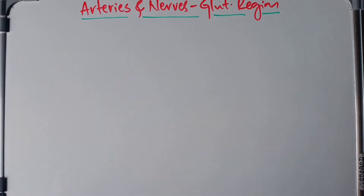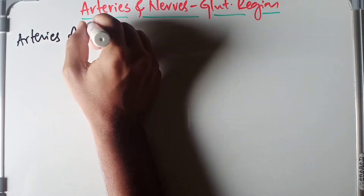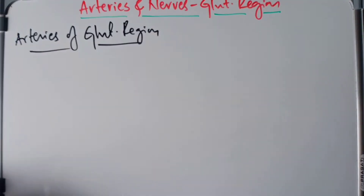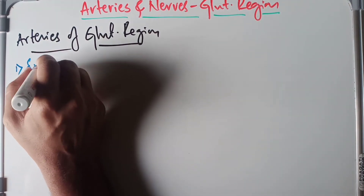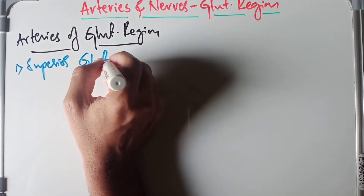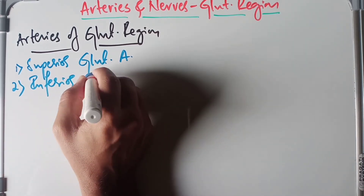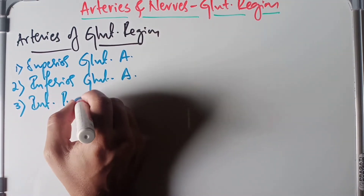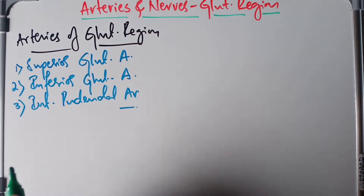Welcome back. Today we're going to discuss the arteries and nerves of the gluteal region, beginning with the arteries. There are three different arteries supplying the gluteal region: the superior gluteal artery, the inferior gluteal artery, and the internal pudendal artery.